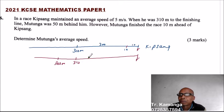Mutunga here. So it means when Kipsang was at 10 meters to the finishing line, Mutunga covered 360. So from here, this distance here, this is 360, 360 meters, not degrees, meters.